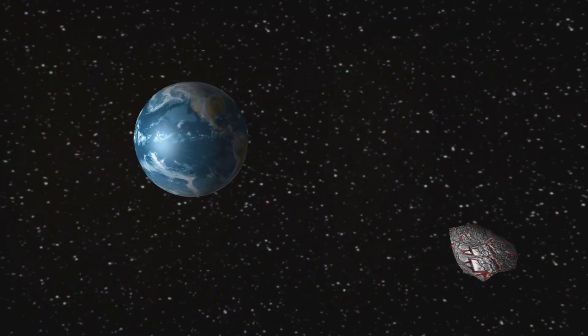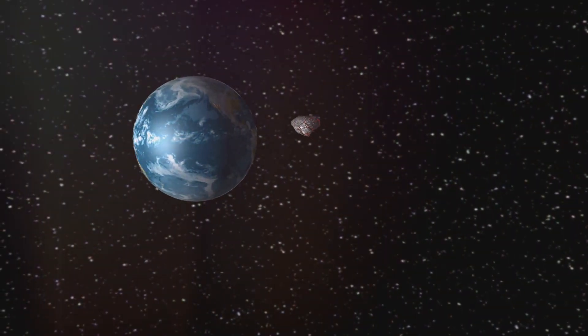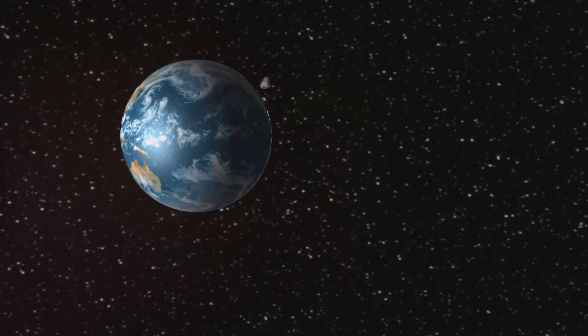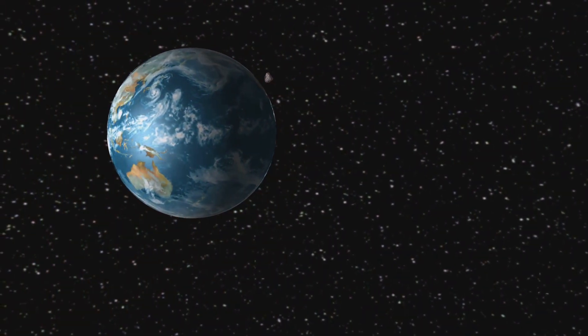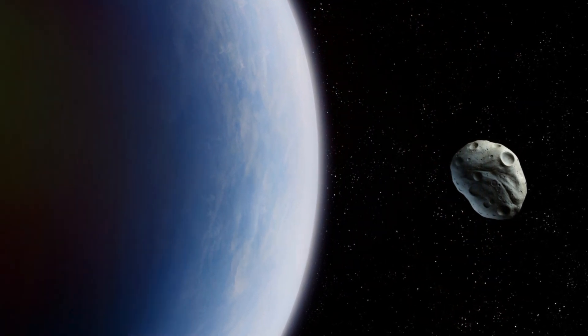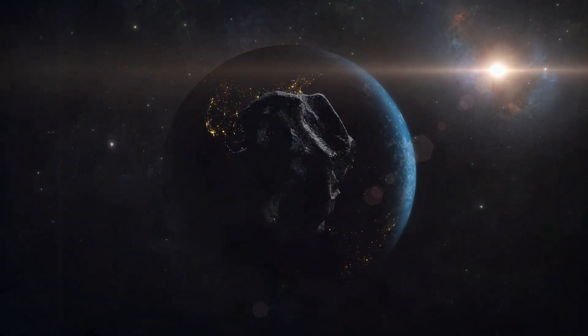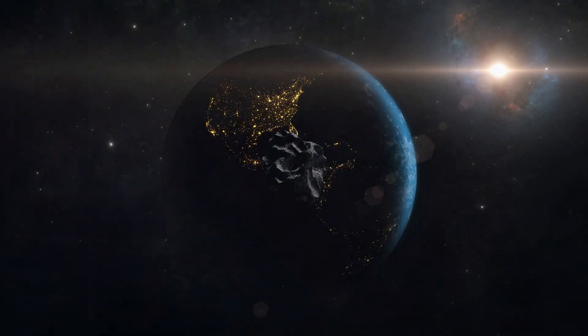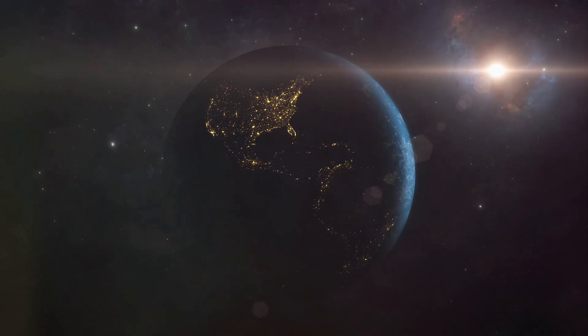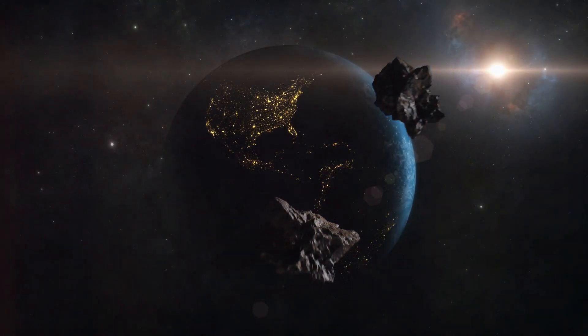Now let's take a step back. Asteroids are a common feature in our cosmic neighborhood. Most of them are found in the asteroid belt, a region of space located between the orbits of Mars and Jupiter. But every now and then, one of these cosmic wanderers strays from its usual path and comes a little too close for comfort.